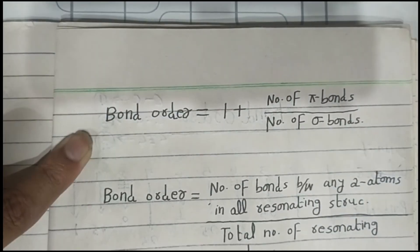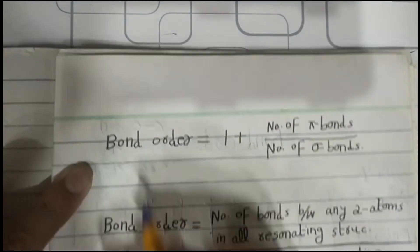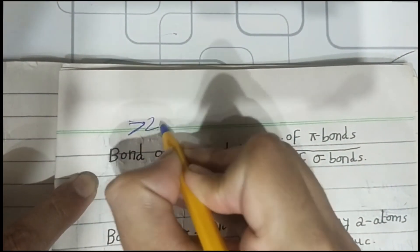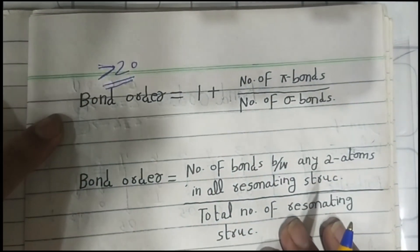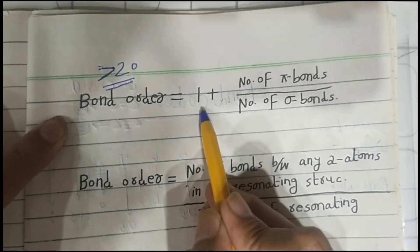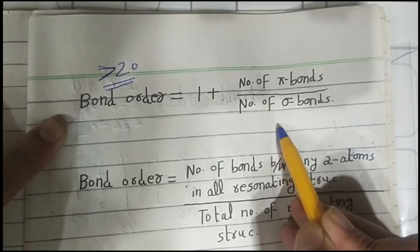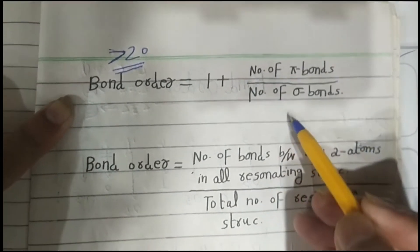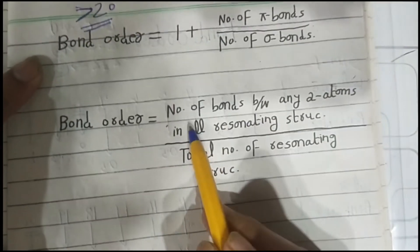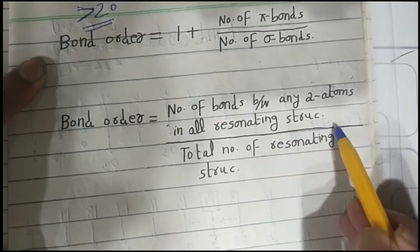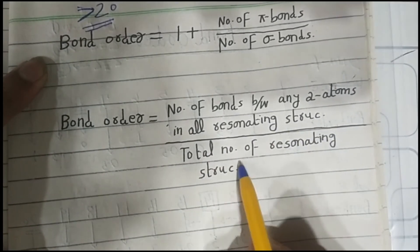If the number of electrons is more than 20, then to calculate bond order use this formula: bond order is equal to the number of bonds between any two atoms in all resonating structures, divided by the total number of resonating structures.